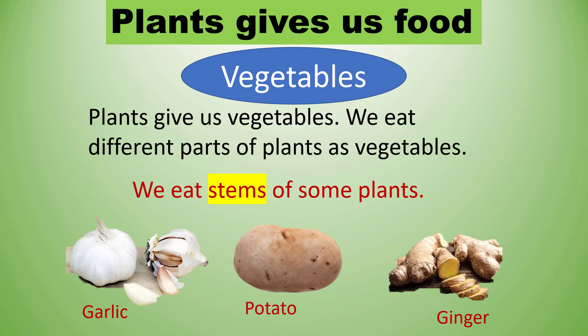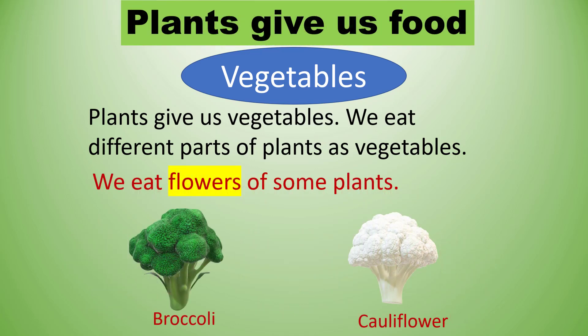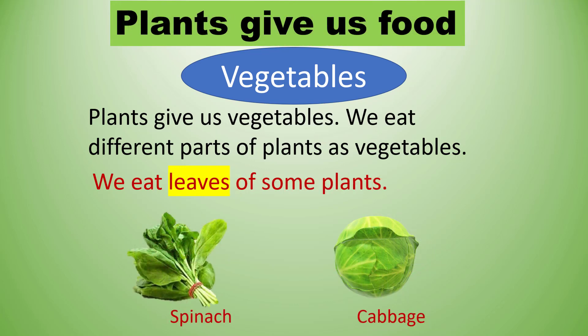Friends, do you know that potato is the king of vegetables? Next we will discuss about flowers. We eat flowers of some plants such as broccoli and cauliflower. We eat leaves of some plants such as spinach, cabbage, and fenugreek, meaning methi, etc.